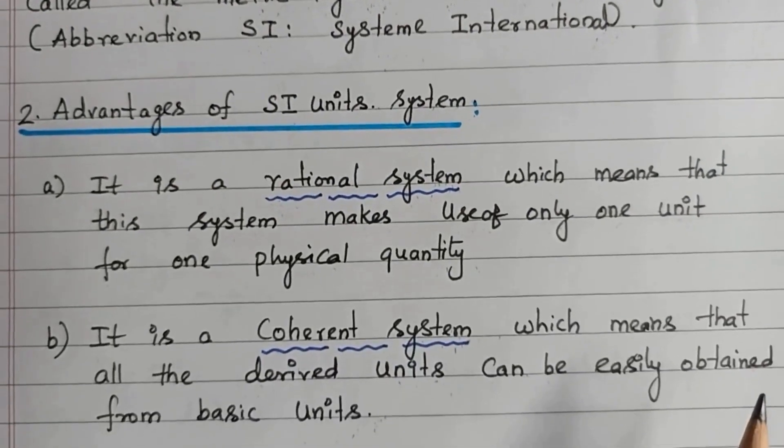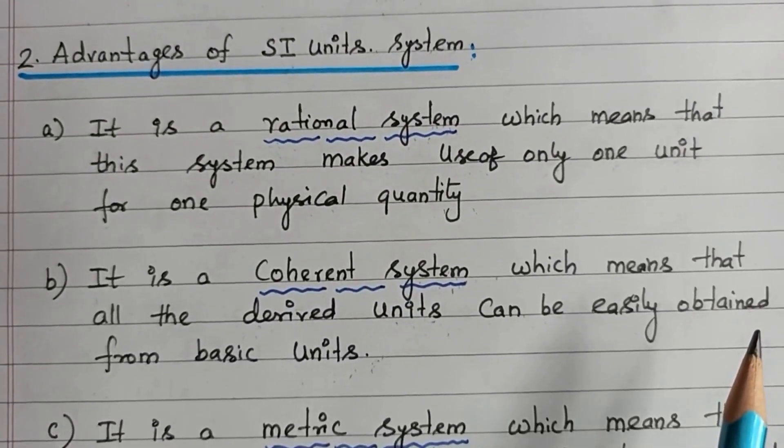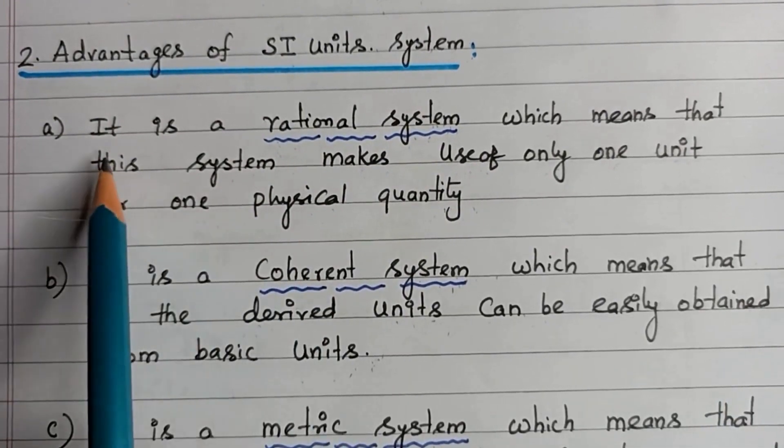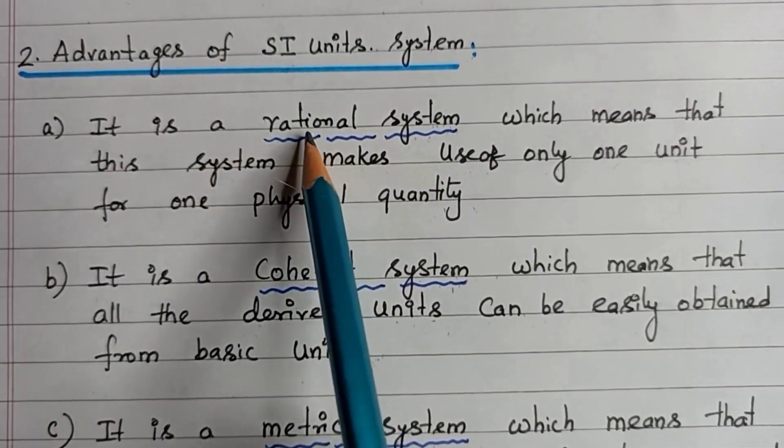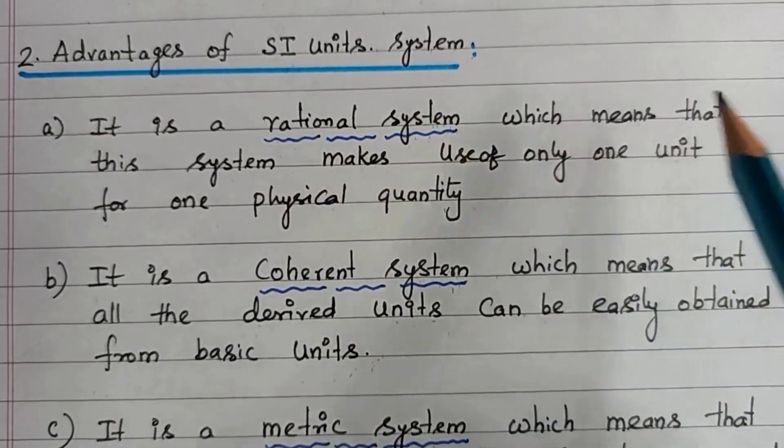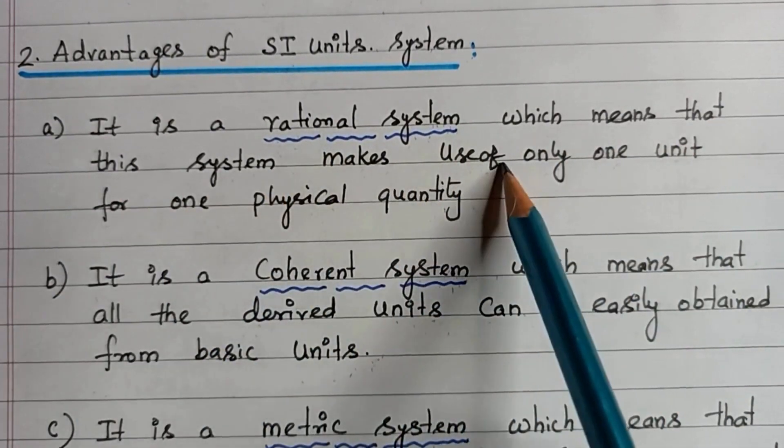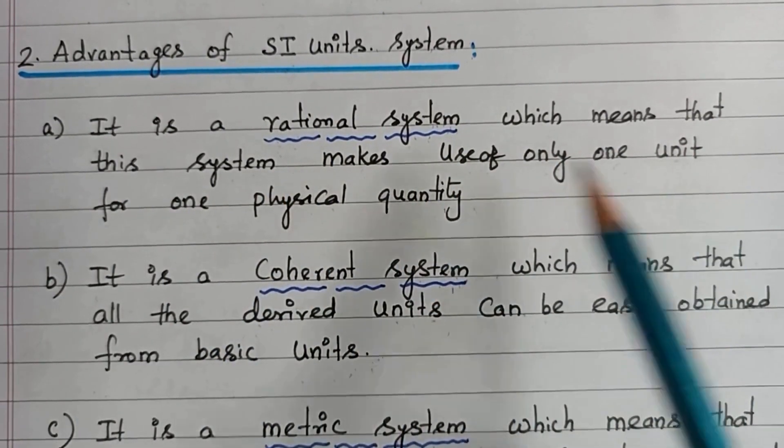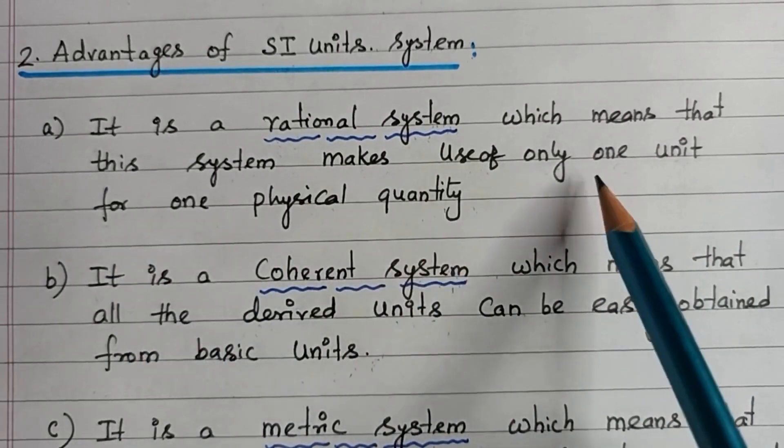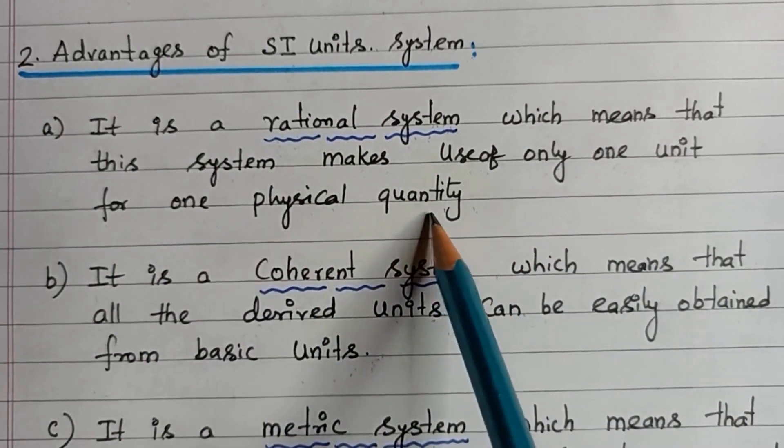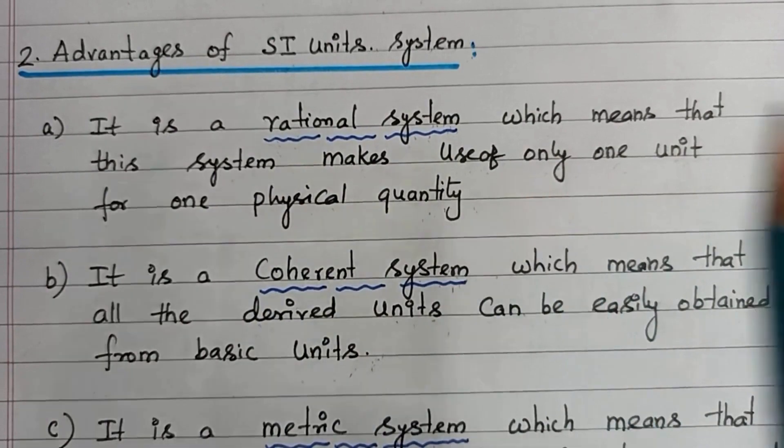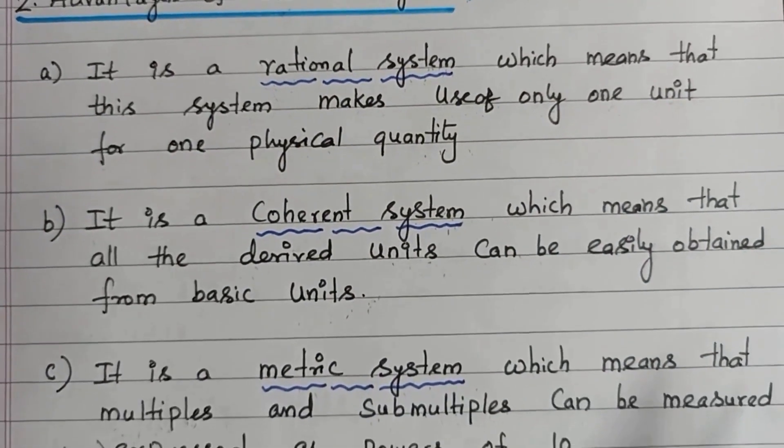What are the advantages of SI Unit System? The first advantage is SI Unit System is a rational system, which means that the system makes use of only one unit for one physical quantity. Every physical quantity has only one unit allowed. Therefore, we call it a rational system.